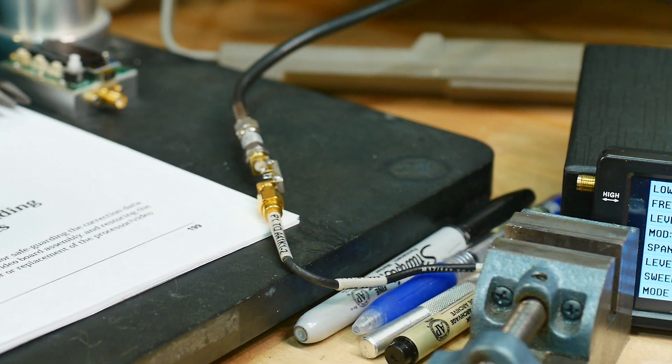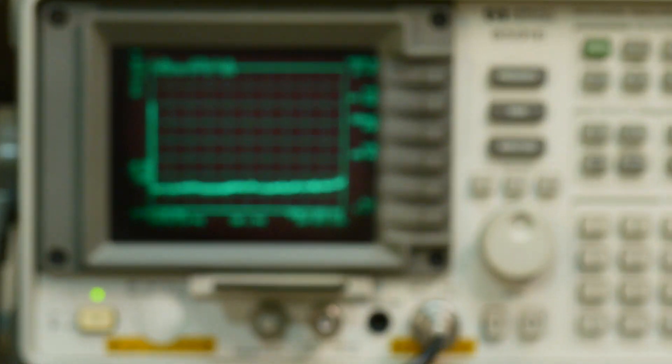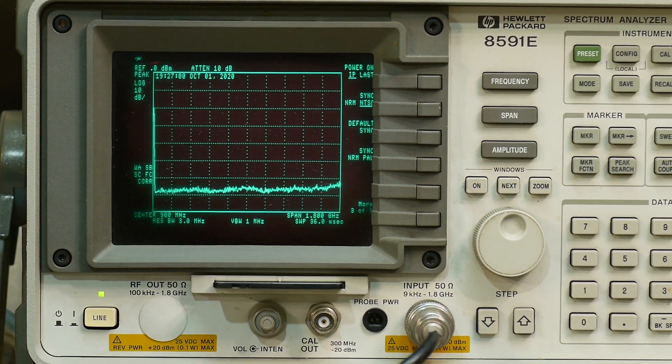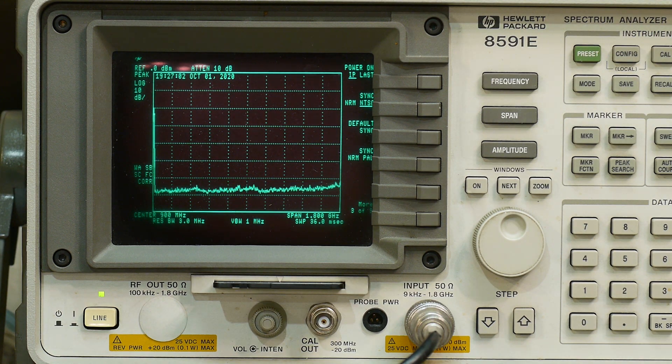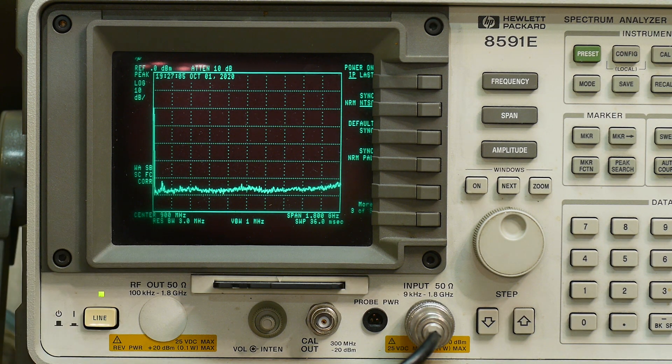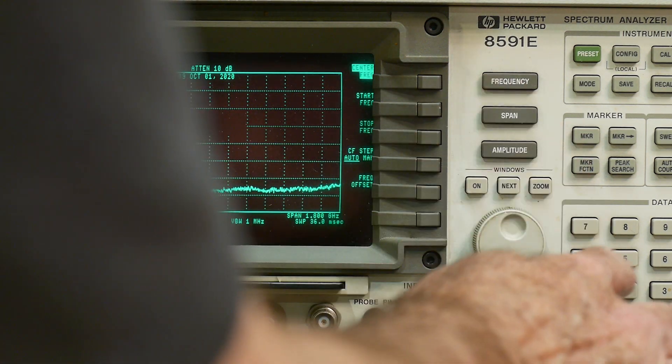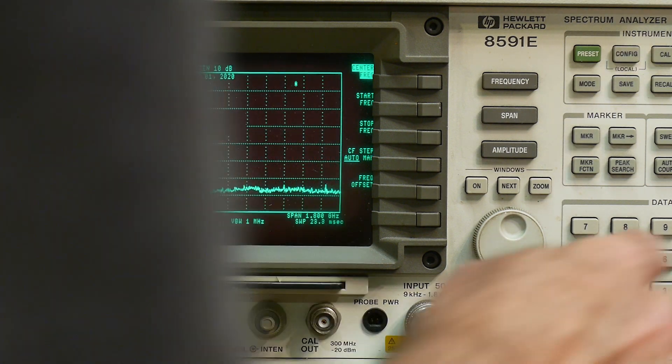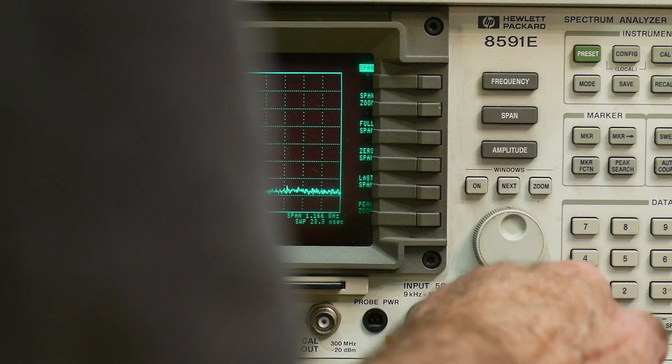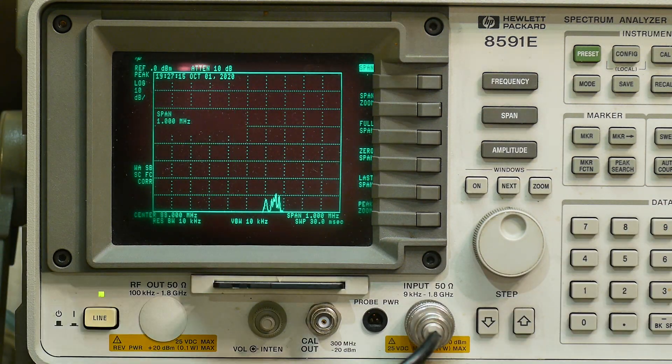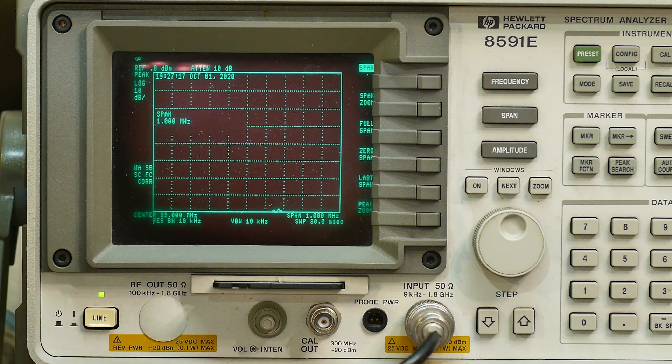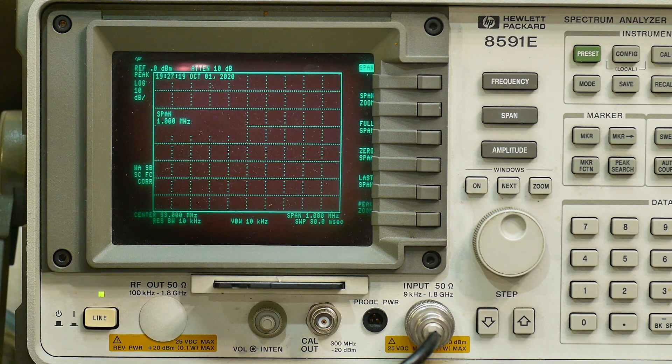So we're going to run that through a filter which is right there, and then we'll come up here to the screen. If you look way down here you might see a little blip up there - that's 83 megahertz. So let's zoom in on that. We'll say frequency 83 megahertz and we'll span one megahertz.